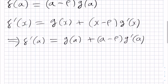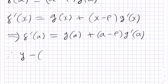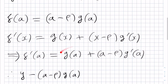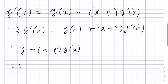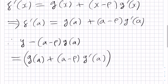Therefore, the tangent is: y minus (a minus p) g of a equals g of a plus (a minus p) g prime of a, times x minus a. This is the tangent to the curve y equals f of x at the point x equals a.